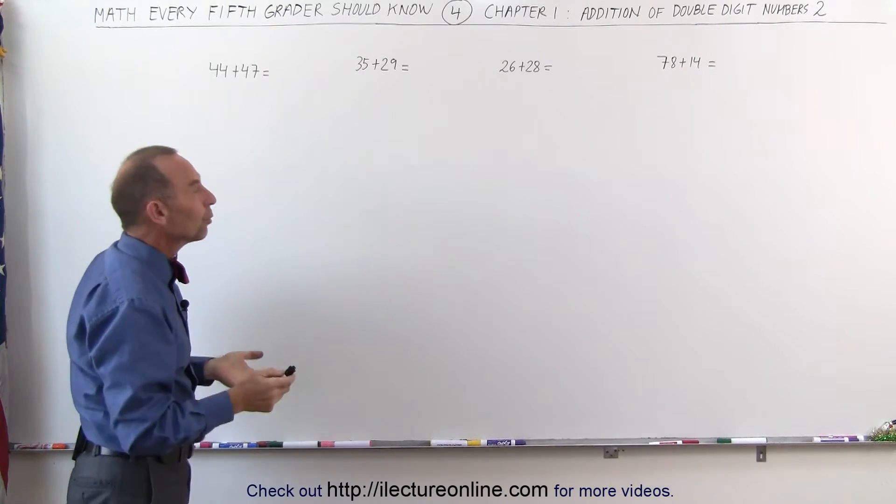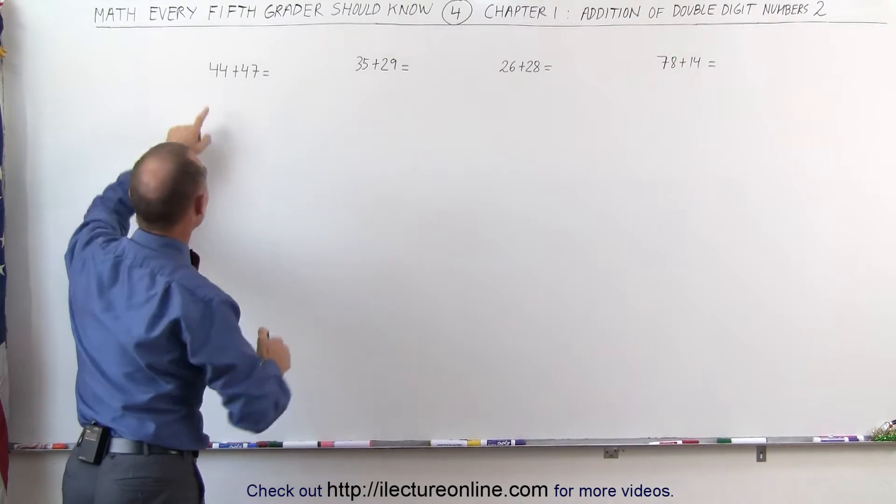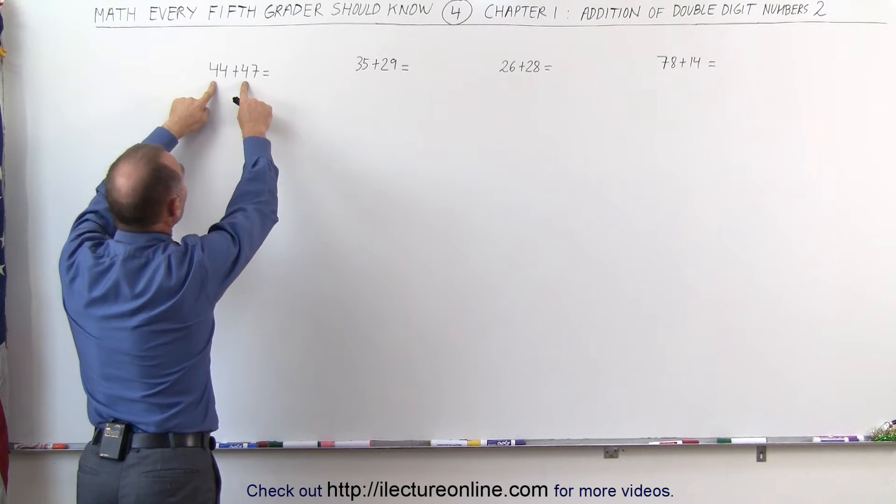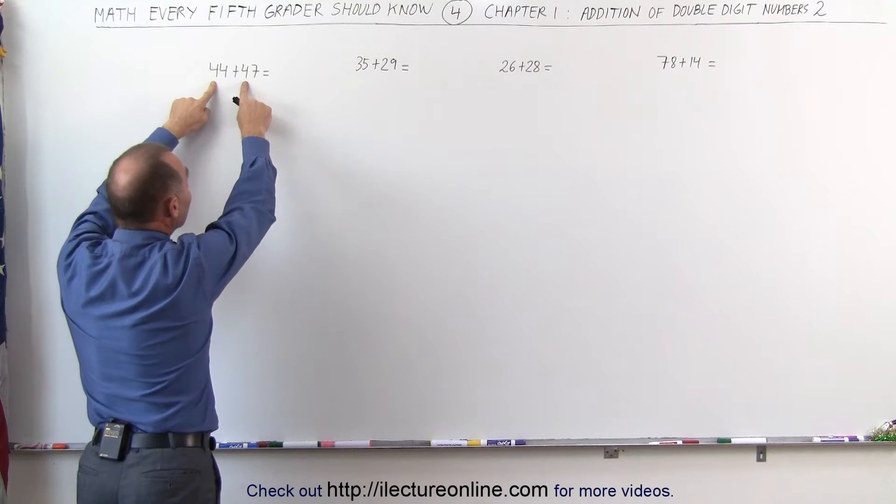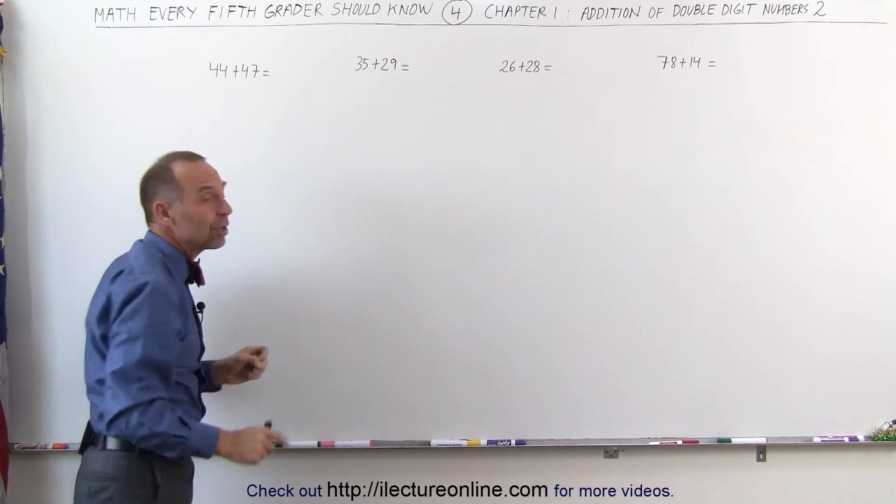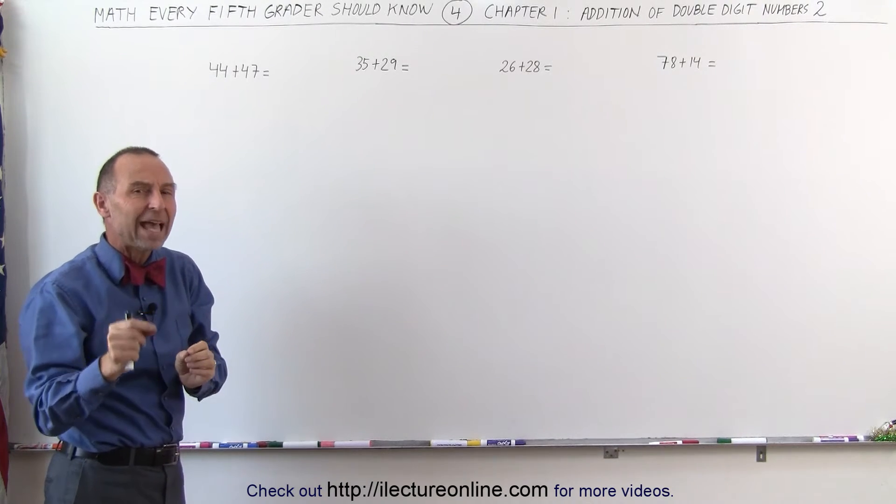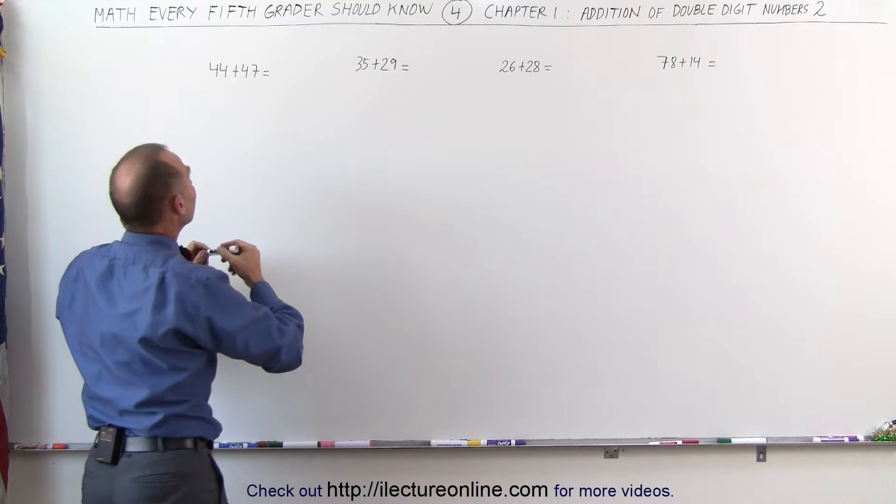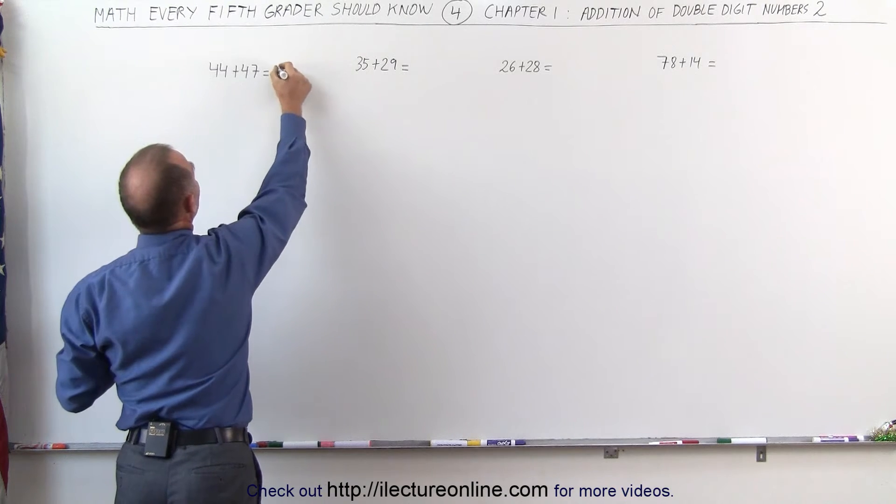So the way to approach that is kind of the way we did on the previous video. You look at the first two numbers, you add them together, you get 8. But you know that when you add these two numbers together, you get a number bigger than 10, so you have to add 1 to that. 8 plus 1 gives me 9, and I plug that down here.